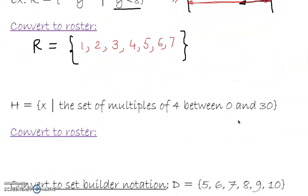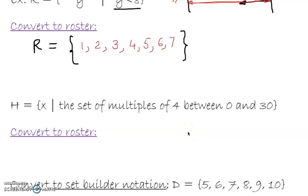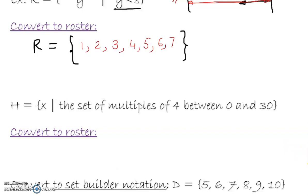Let's look at the next one: Set H is all elements of x such that x is a multiple of 4 between 0 and 30. Convert into a roster form. By now you can easily do it — multiples of 4. Pause the video and try this one as your homework, then put the answer in the comment box and I'll respond.